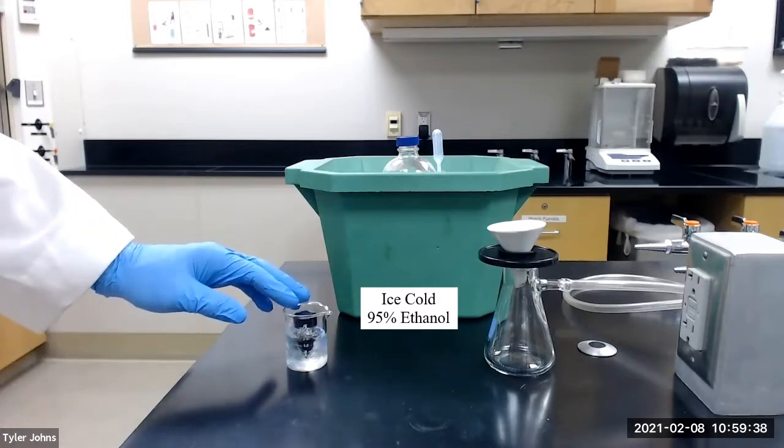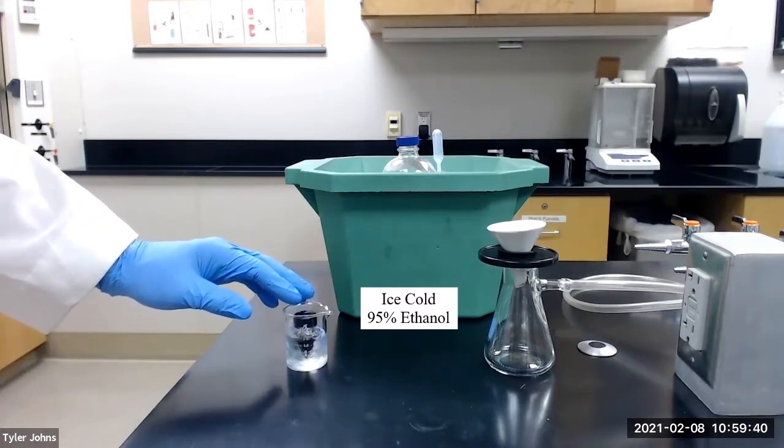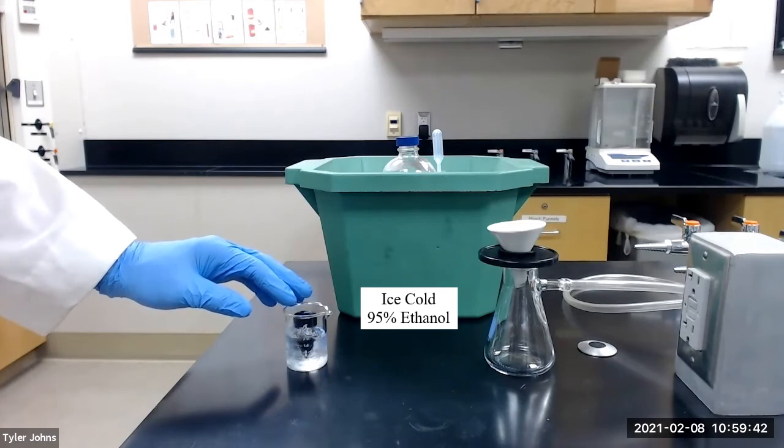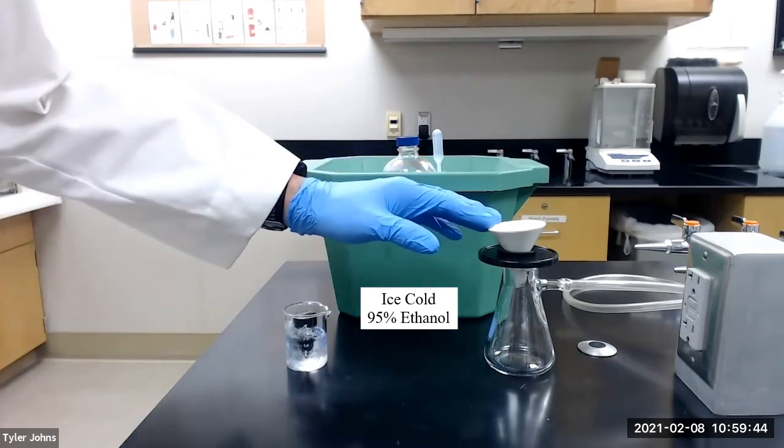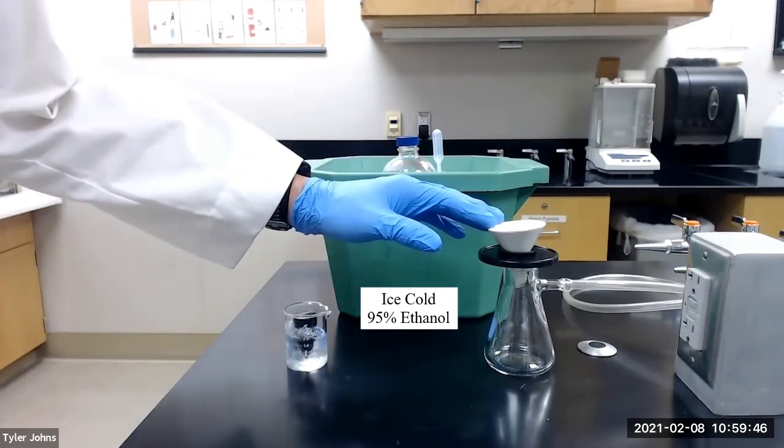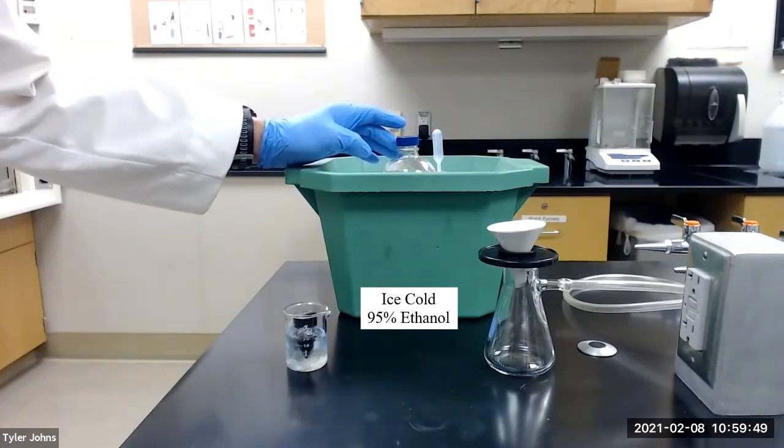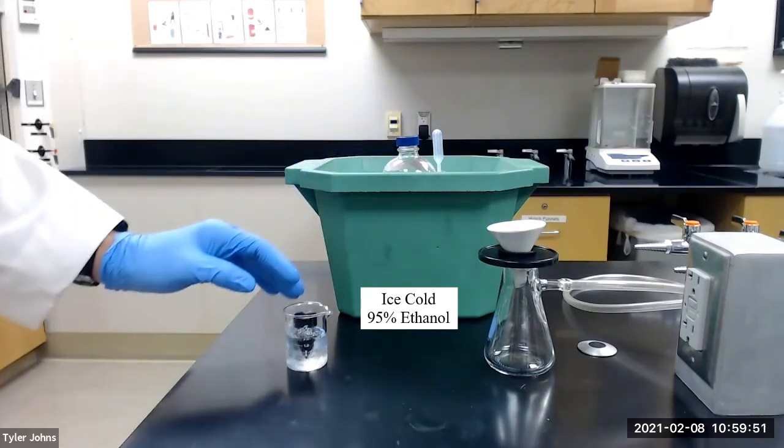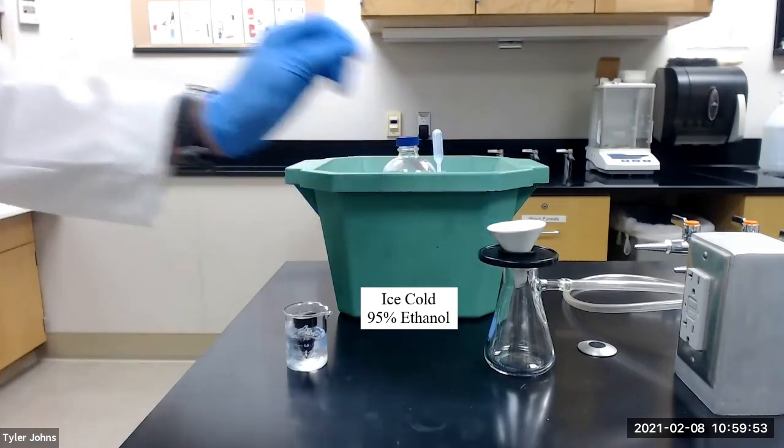After crystallization has completed, we will collect our tetraphenylcyclopentadienone crystals by vacuum filtration using a Hirsch funnel. We will use ice-cold 95% ethanol to aid in the transfer and the washing of our crystals.